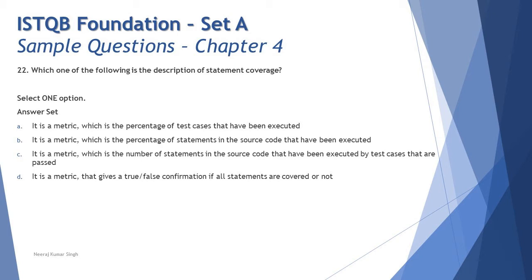Let's look at option C: it is a metric which is the number of statements in the source code that have been executed by test cases that have passed. Statement coverage is not necessarily dependent on the outcome of the test — whether the test passes or fails. It is more about how many statements were covered by the test cases. Option D says it is a metric that gives a true or false confirmation if all statements are covered or not — that is done by an if-statement, not statement coverage.